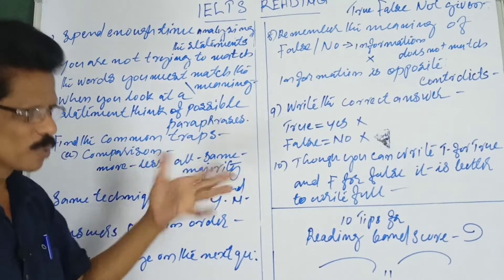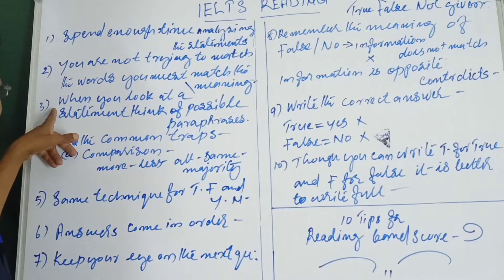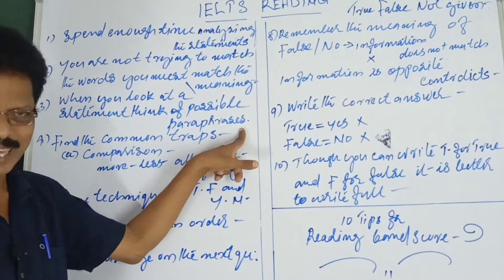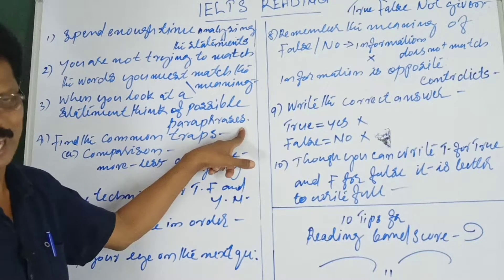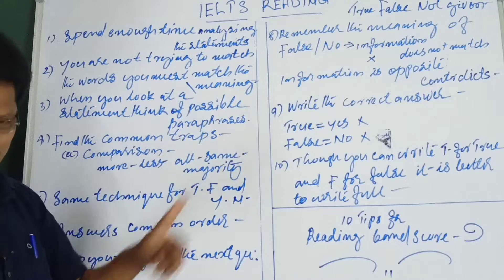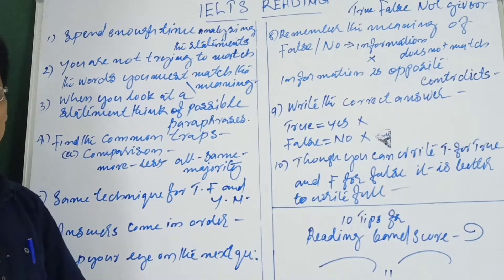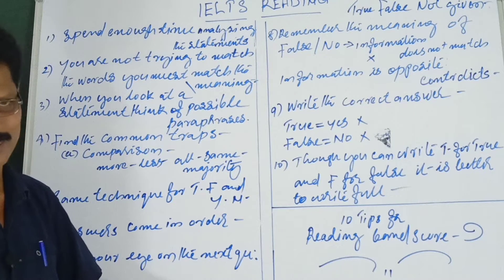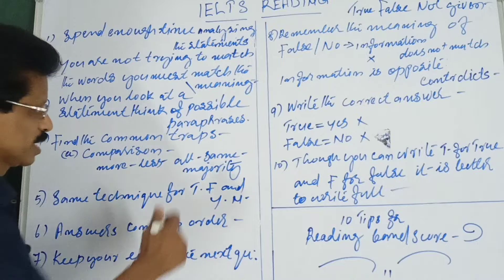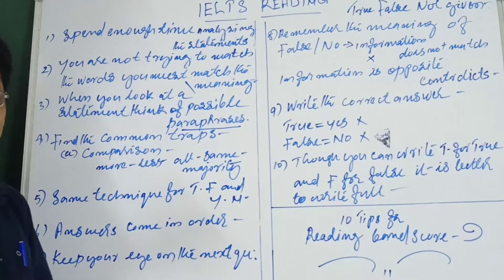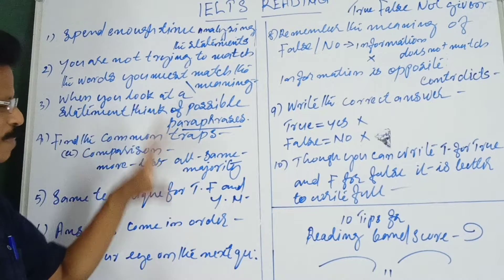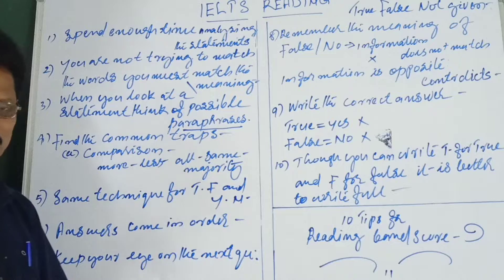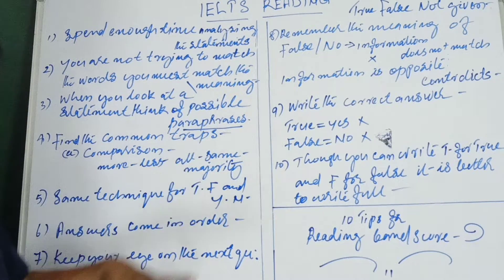Tip number three: when you look at a statement, think of possible paraphrases. In your mind, try to paraphrase the statement and then compare it with what is given in the passage. Find out whether the meaning is exactly accurate. IELTS tests heavy paraphrasing, so finding exact meaning, word meaning, synonyms, and vocabulary are all very important. Prepare yourself for paraphrasing.